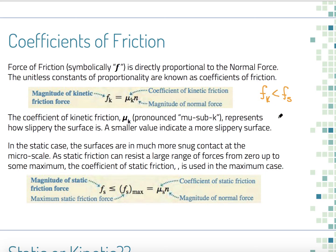The only real difference is: is my object moving or is it stationary? If it's moving, I just need the normal force and the coefficient of kinetic friction to calculate the kinetic friction force. For static friction, it's a little more complicated, because our static friction is actually only calculated as a maximum static friction.